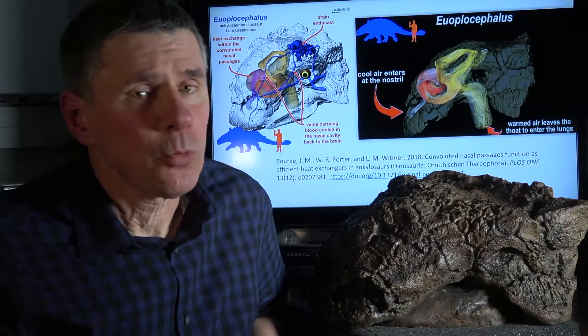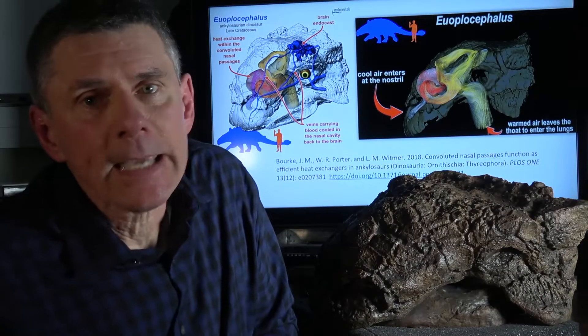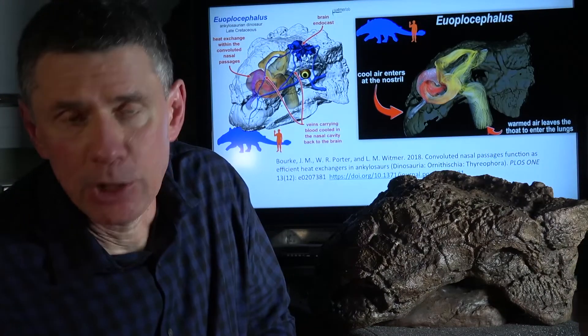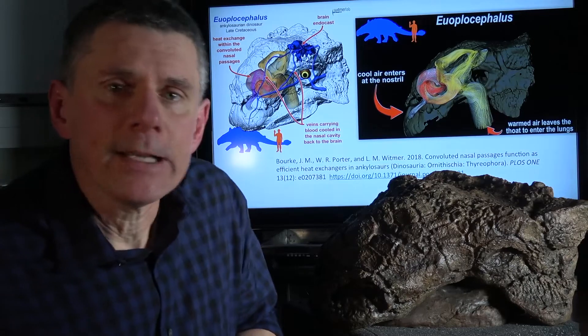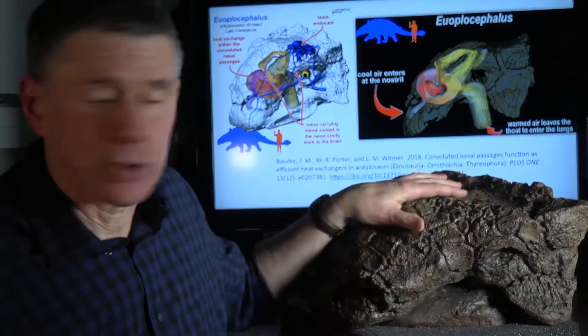Hi, I'm Larry Whitmer and welcome to another Random Act of Anatomy. Last night I gave a public science cafe here on the Ohio University campus, and one of the things I talked about was the crazy nasal cavities of armored dinosaurs.